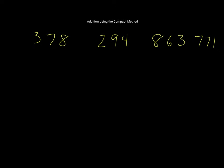Okay, in this video I'm going to cover addition using the compact method. You'll see that I've got four numbers here: 378, 294, 863, and 771. I'm just going to pick two of these numbers at random and do an addition and a subtraction using the compact method.